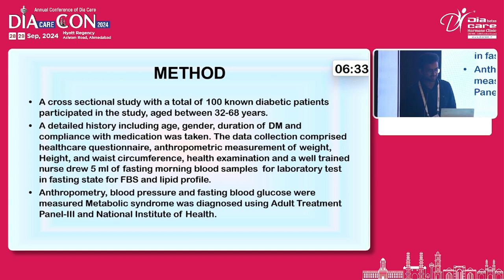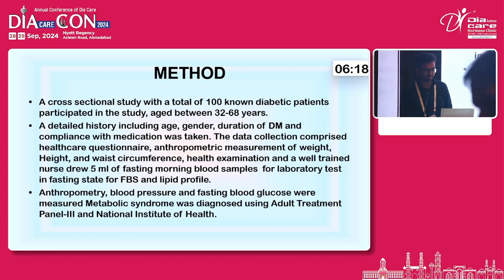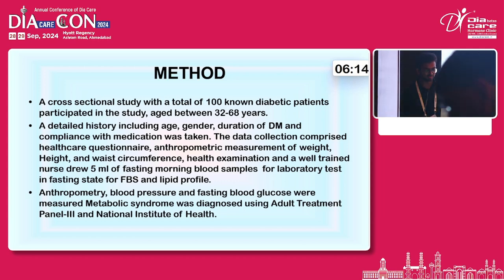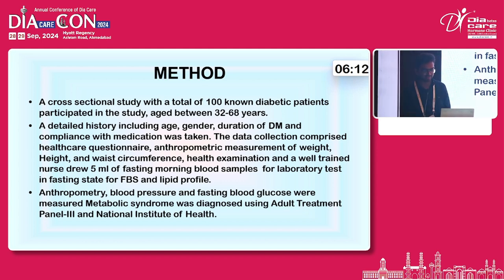In the method, a cross-sectional study with a total of 100 diabetic patients participated in the study, age between 32 to 68 years. A detailed history including age, gender, duration of DM, and compliance with medications was taken. Data collection comprised healthcare questionnaires, anthropometric measurements of weight, height, and waist circumference, health examination, and a well-trained nurse drew 5 ml of fasting morning blood samples for laboratory tests including FBS and lipid profile.